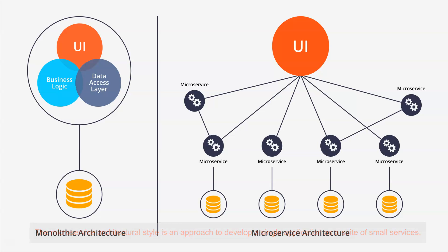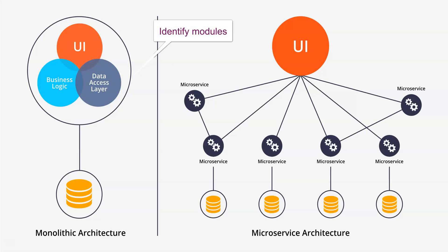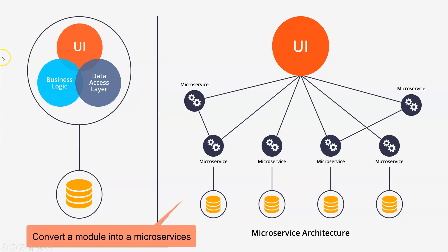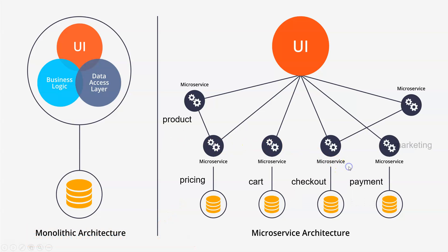For example, you have one big monolithic application. With microservices, what you do is break down your big application into small modules. Each module of your big application becomes a microservice. For example, your product module becomes a product microservice, your pricing module becomes a pricing microservice, your cart module becomes a cart microservice, and similarly for checkout, payment, and marketing.